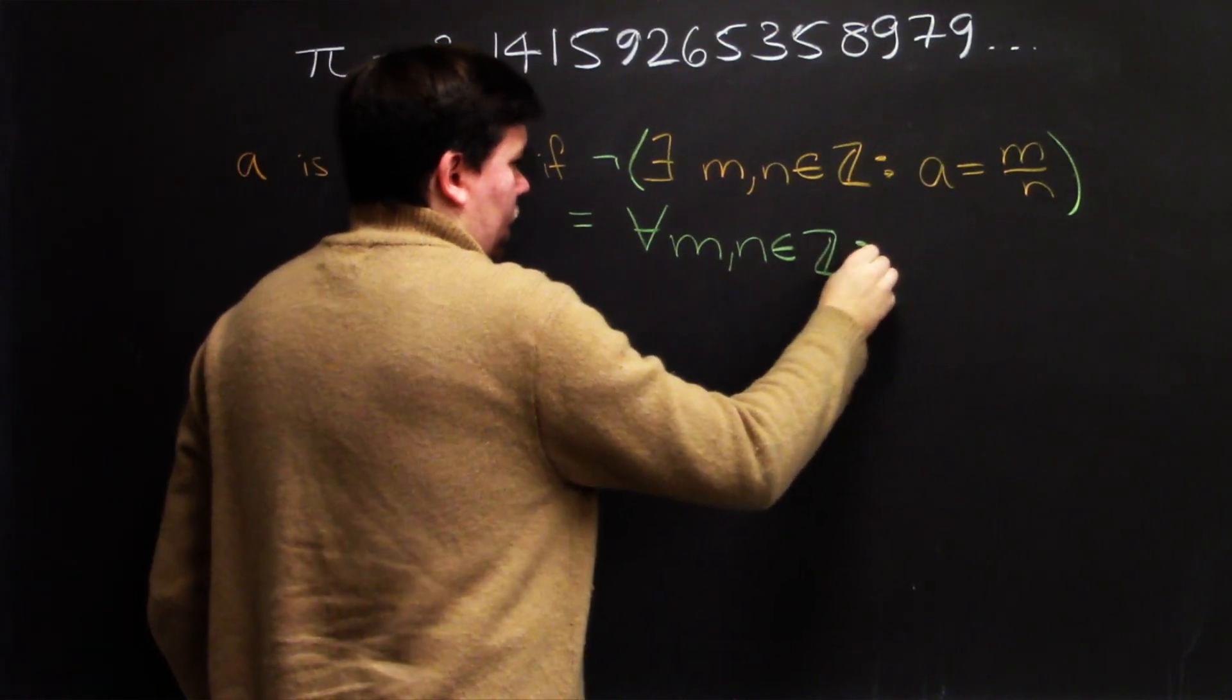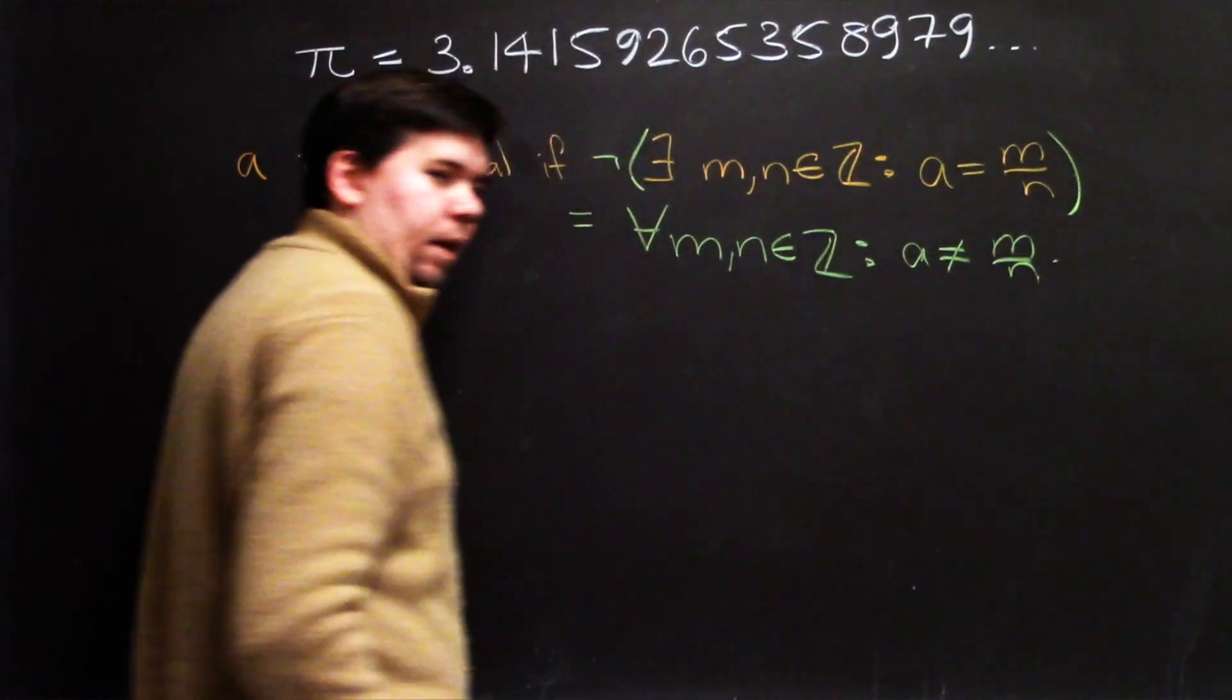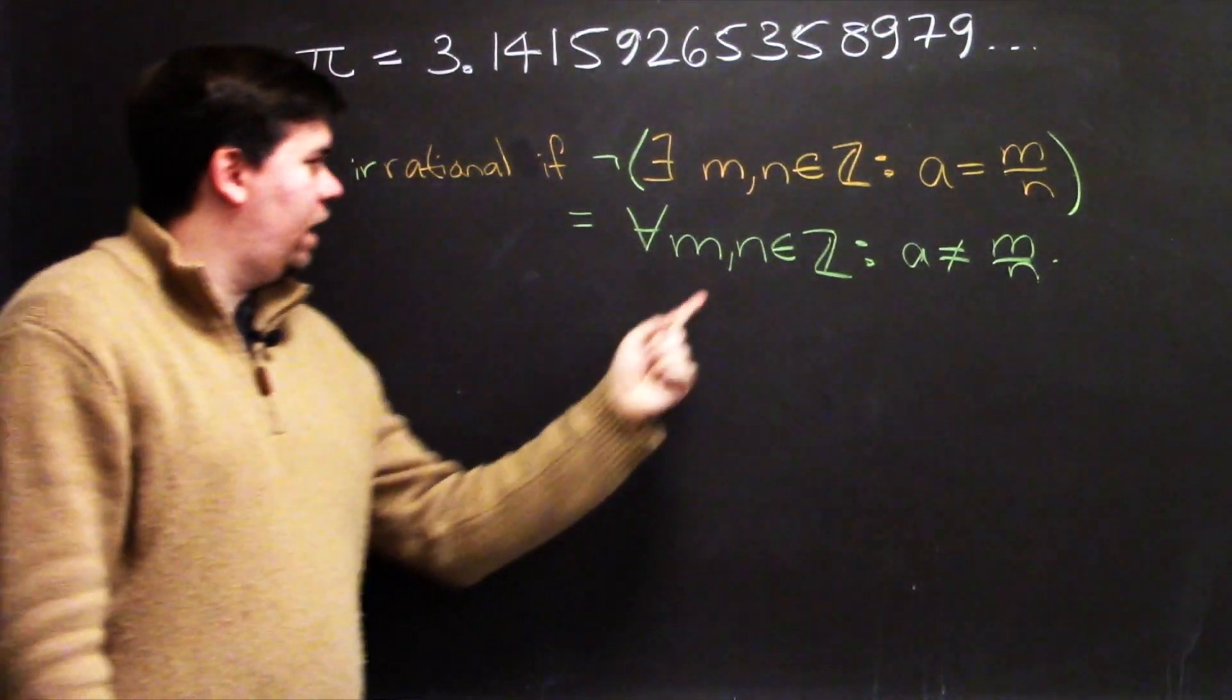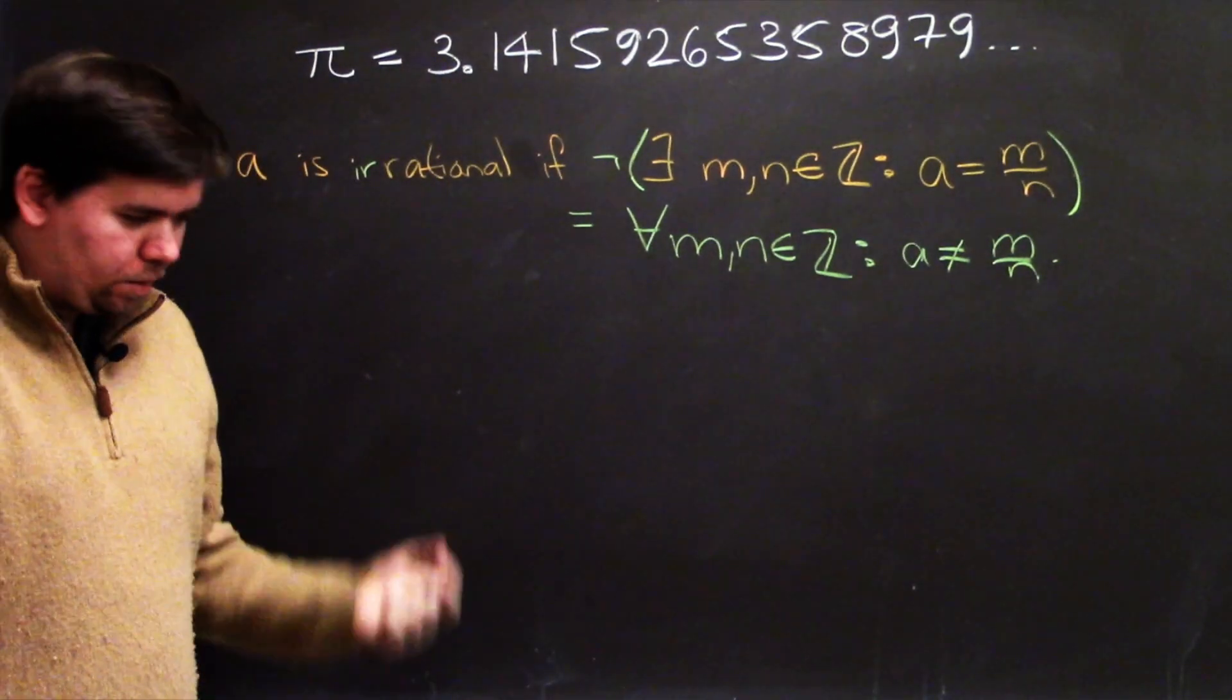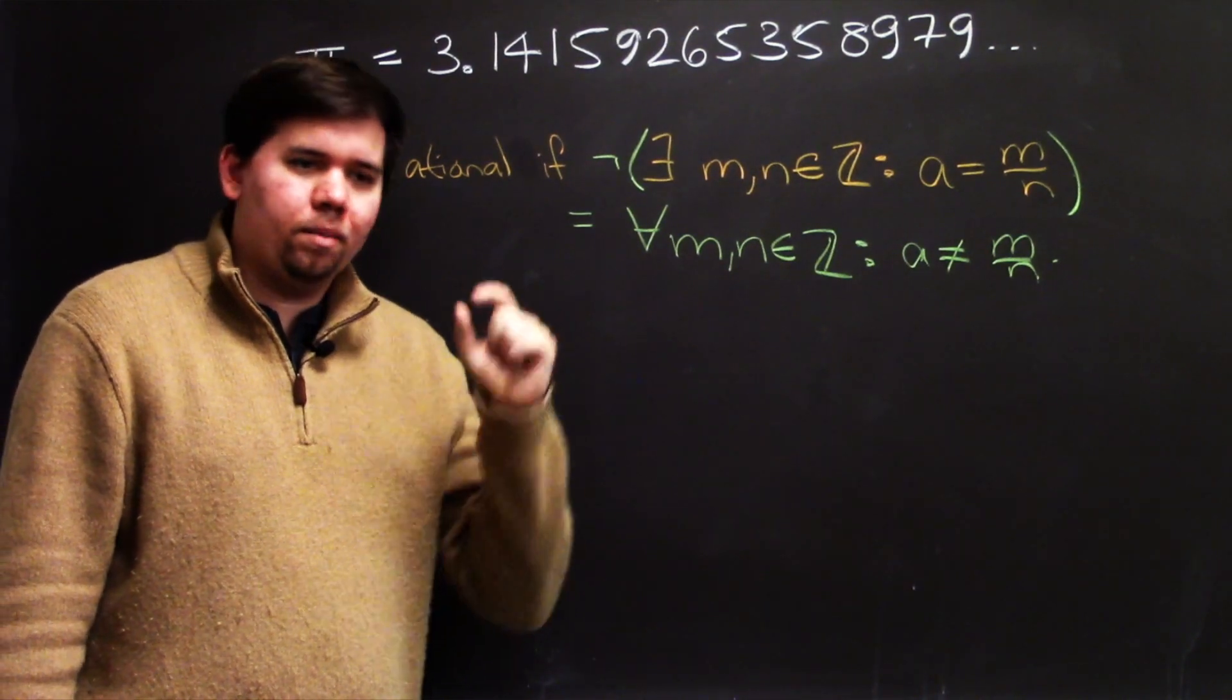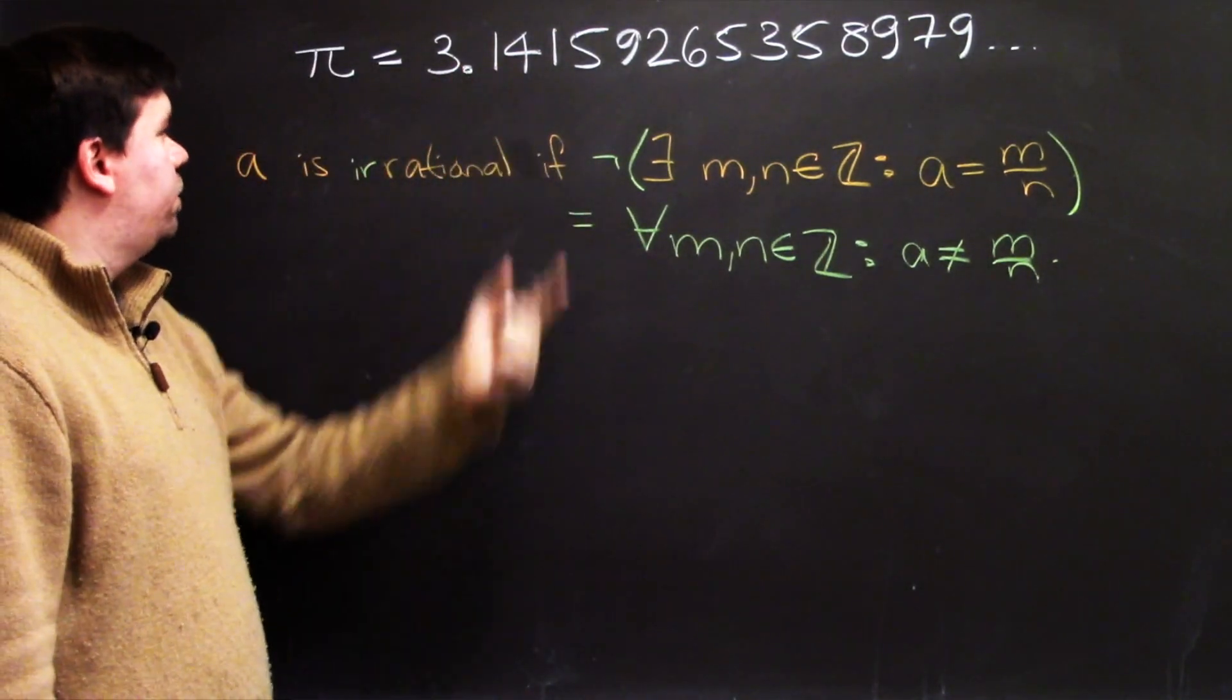it is not the case that a is equal to m over n. That's precisely what we mean when we say pi is irrational. We can't find any integers so that it comes out to be that integer over that one. There are some that are close, like pi is pretty close to 22 over 7, but it's not quite 22 over 7. So 22 over 7 are close to pi, but not quite. That's what it means for pi to be irrational.